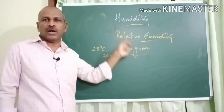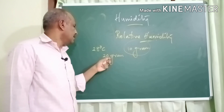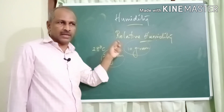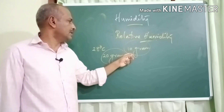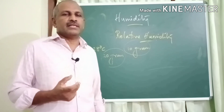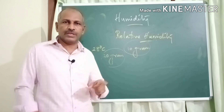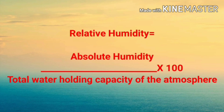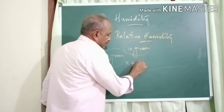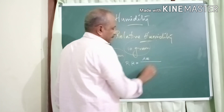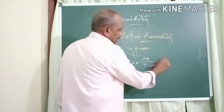Relative humidity is the ratio between the actual amount of water vapor — in this case 10 grams — and the water holding capacity of the atmosphere at a given temperature. At 28 degrees Celsius the atmosphere can hold 20 grams, but actually contains only 10 grams. Relative humidity is always expressed in percentage. The formula is: Relative Humidity = (Absolute Humidity ÷ Total Water Holding Capacity) × 100.